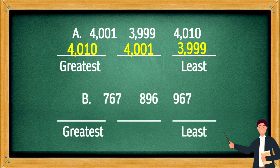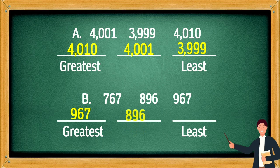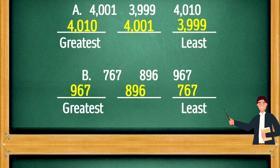Second set: arrange from greatest to least. The greatest is 1,900, and the least is 1,800.